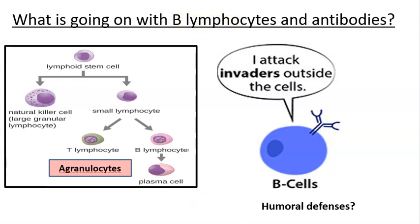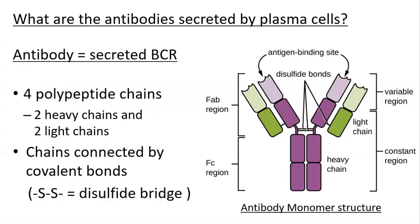In this section we look at B lymphocytes and plasma cells producing antibodies. The B cell receptor is key — an antibody is essentially a secreted B cell receptor. The antibody structure is made up of four polypeptide chains: two heavy chains, which are larger proteins, and two light chains, which are smaller, all held together by covalent disulfide bonds.